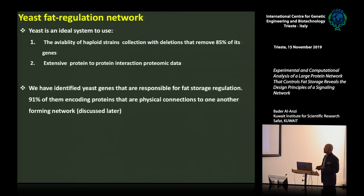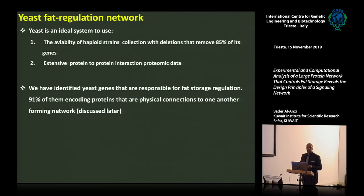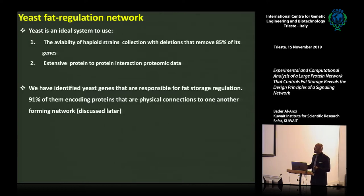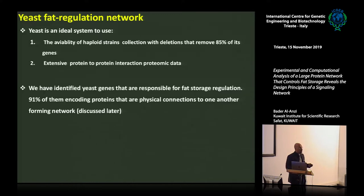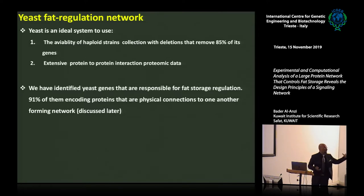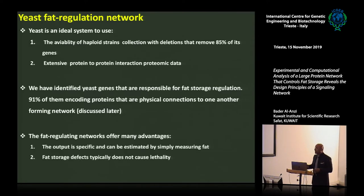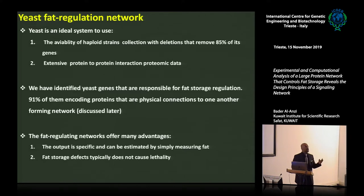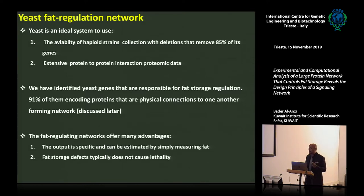The screen was successful, and we identified close to 91 genes. Those 91 genes seem to encode proteins that are physically binding to one another, and about 70% of those genes are evolutionarily conserved. Some of them have been hypothesized to be involved in fat storage. I will go into detail on how we identified those genes and how we constructed the network. We were quickly struck that this network provides a good opportunity to address the criticisms of the old way of analyzing biological networks.